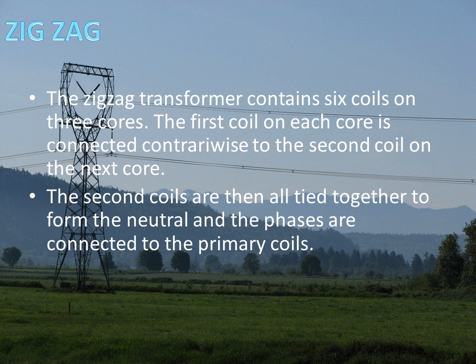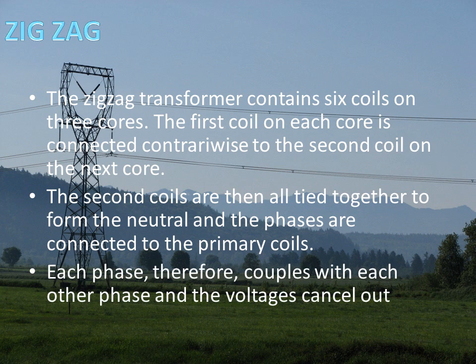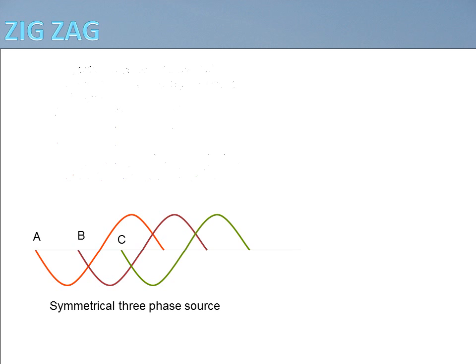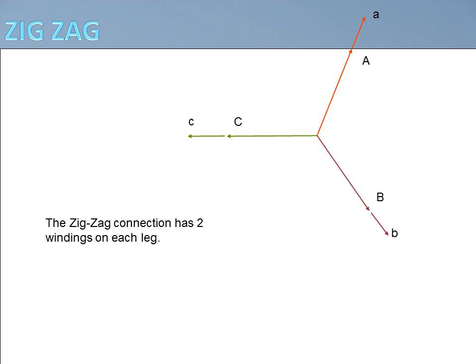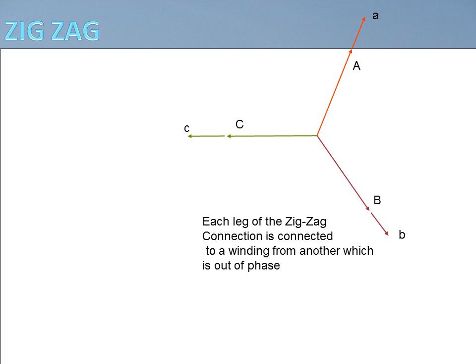The second coils are then all tied together to form a neutral, and the phases are connected to the primary coils. Each phase therefore couples with each other phase, and the voltages cancel out. Schematically, it looks like this — it's a symmetrical three-phase source, a typical wye-connected transformer on a three-phase line. The vector diagram of this connection shows a balanced circuit with no current flowing in the neutral and equal voltage on all three phases. The zigzag connection has two windings on each leg. Each leg of the zigzag is connected to a winding from another leg, which is out of phase.